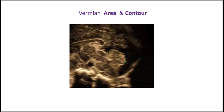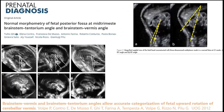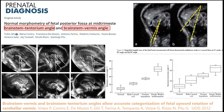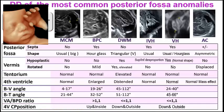For a more accurate measurement of vermian size, we can also measure the surface area and contour of the vermis. In posterior fossa anomalies, we can also measure in the mid-sagittal view the brainstem-vermian angle and the brainstem-tentorial angle to quantify the rotation of the vermis. These angles can be useful in the differential diagnosis of posterior fossa anomalies.